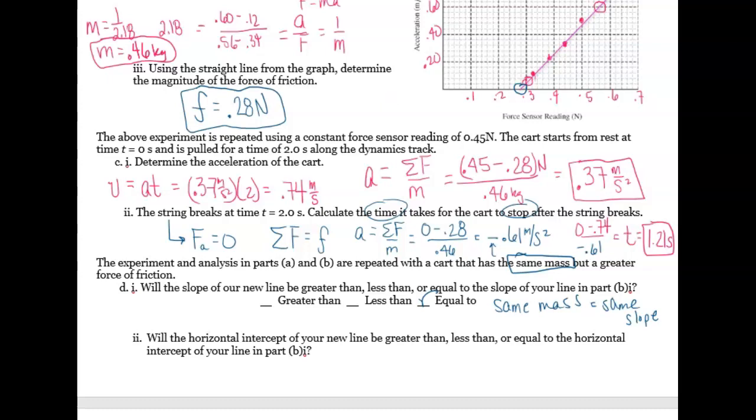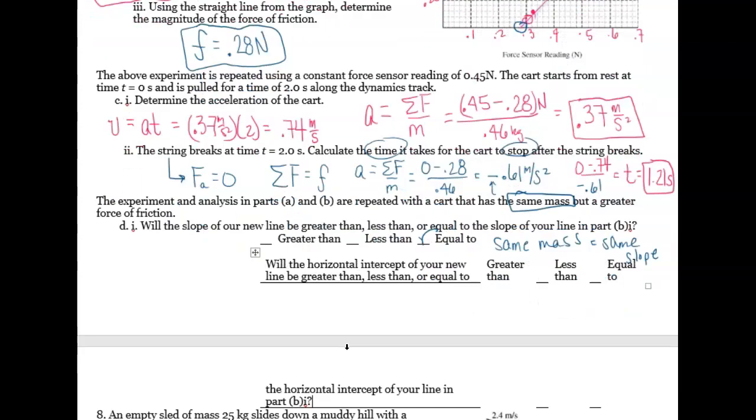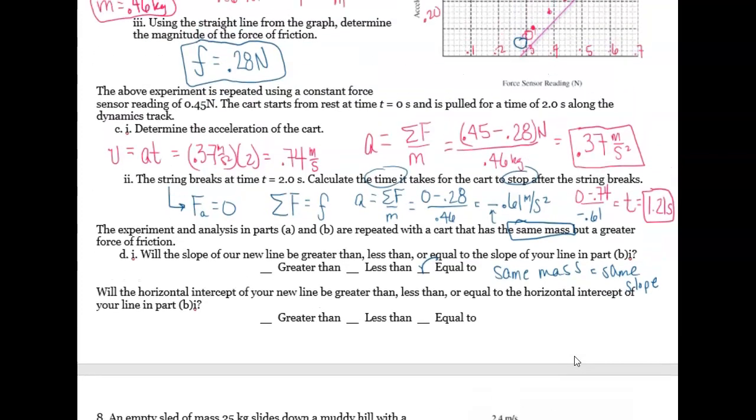The last question says, will the horizontal intercept of your new line be greater than, less than, or equal to the horizontal intercept of the line in part B? Well, our force of friction was our intercept. So if it says it has a greater friction, up here, that means I'm going to have a greater number for, or a larger number for my horizontal intercept. So it's just reading the graph and knowing how to interpret it. Let me know if you have any questions. I'm going to move on to question number eight.